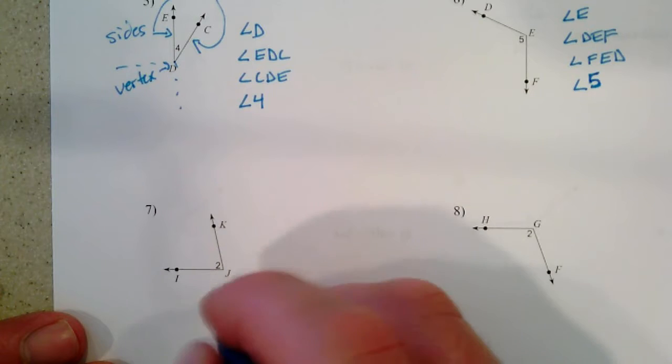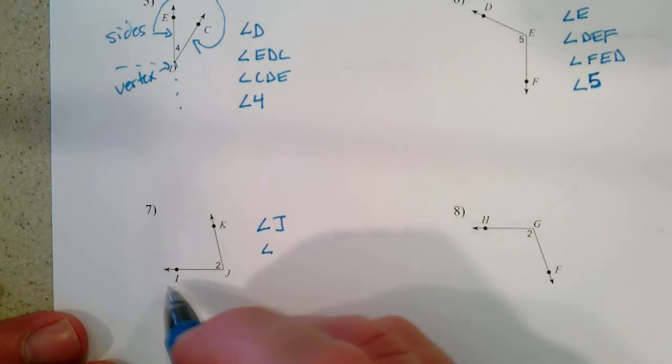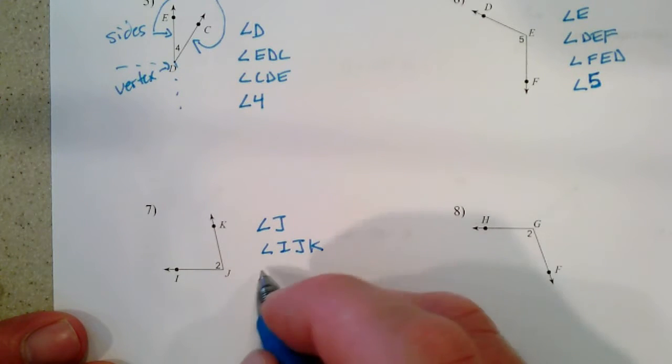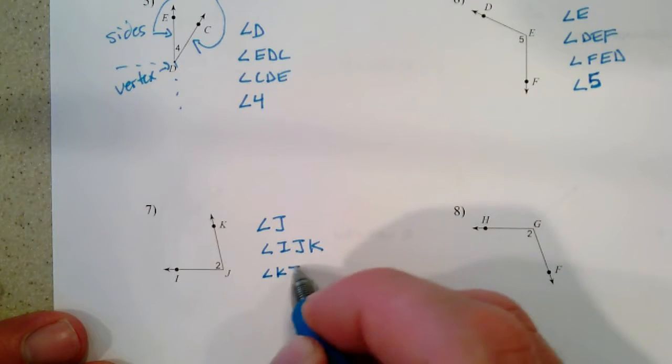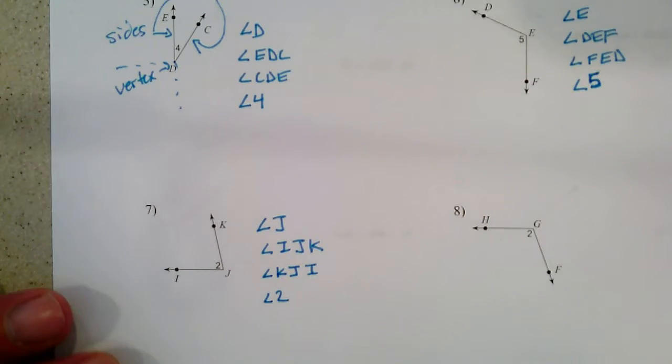Next up, we could call this angle J. Or we could call it IJK. Or we could call it KJI, going the other direction. Or we could just use the little 2 inside and call it angle 2. I'll give the last one up to you. Flip over to the other side.